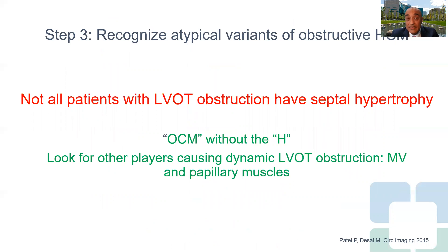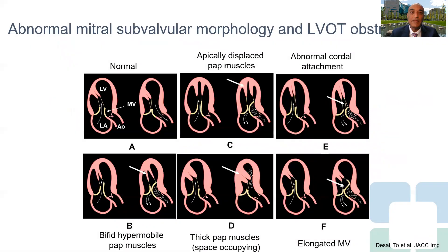Step three is to recognize other atypical variants of obstructive HCM. Not all patients have basal septal hypertrophy — you have to recognize the OCM without the H, and look for other players including mitral valve and papillary muscles causing dynamic LV outflow tract obstruction. Based on a paper we published, the cartoon illustrates various scenarios of abnormal mitral subvalvular morphology: panel A is normal; B is bifid hypermobile papillary muscles; C shows apically displaced papillary muscles; D shows thick papillary muscles; and E and F show abnormal cordal attachment or elongated mitral leaflets. There could be more than one abnormality accounting for outflow tract obstruction.